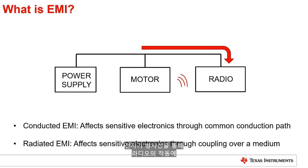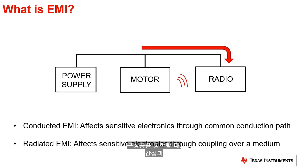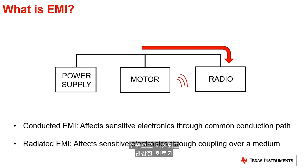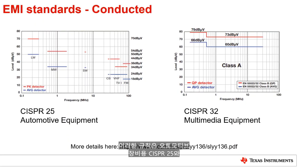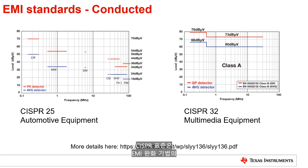When end equipment manufacturers integrate components from various sources, the only way to guarantee that the interfering and sensitive circuits can coexist is through the establishment of a common set of rules, where the interference is limited to a certain level and the sensitive circuits are capable of handling that level of interference. These rules are established in industry standard specifications such as CISPR 25 for automotive equipment and CISPR 32 for multimedia equipment. CISPR standards are critical for EMI design, as they will dictate the targeted performance of any EMI mitigation technique.